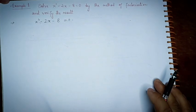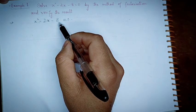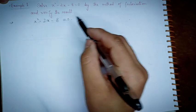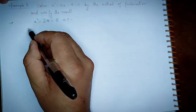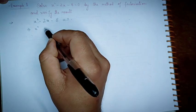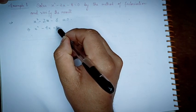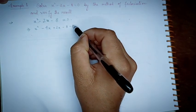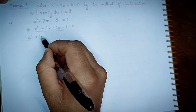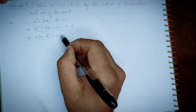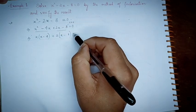So this is the splitting method. We are going to multiply to get minus 8, and the numbers are 4 and negative 2. We are going to take a look at x squared minus 4x plus 2x minus 8 equal to 0.